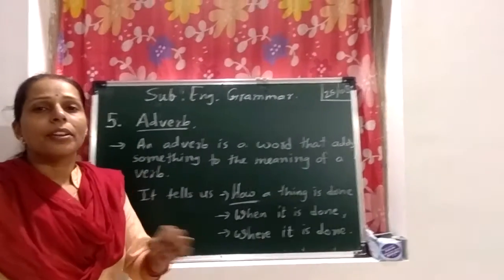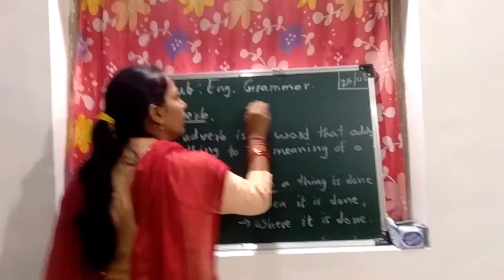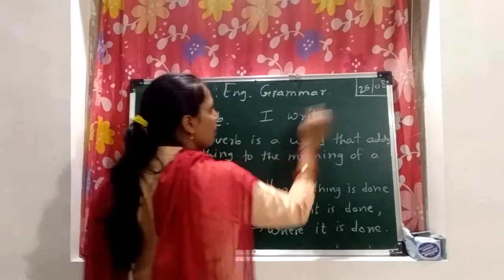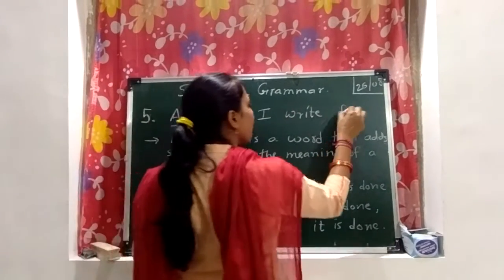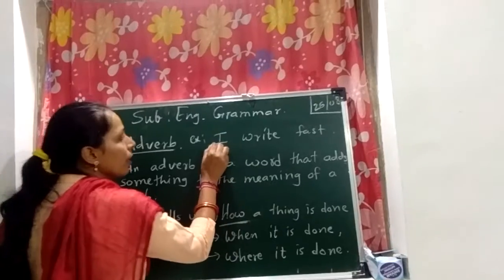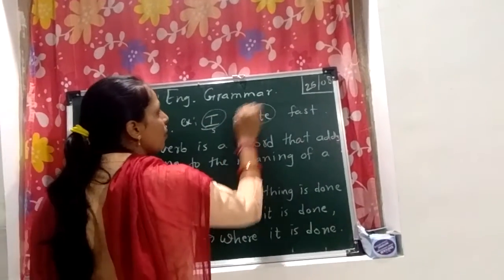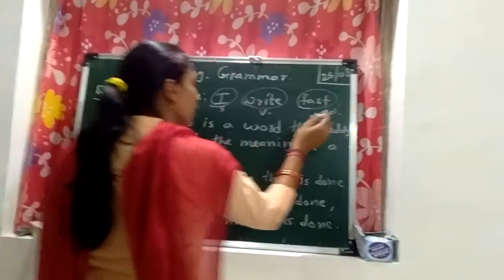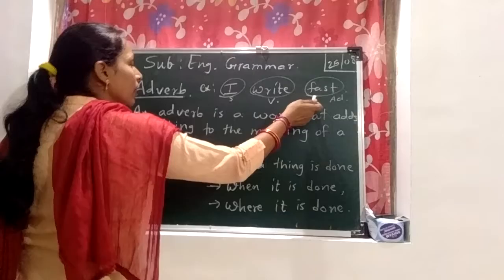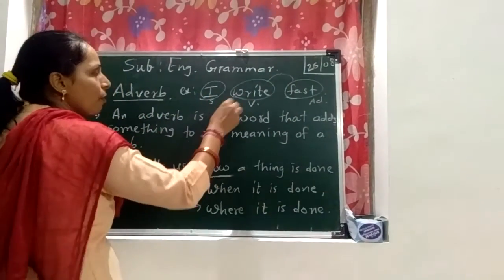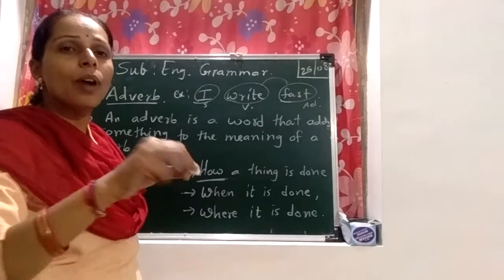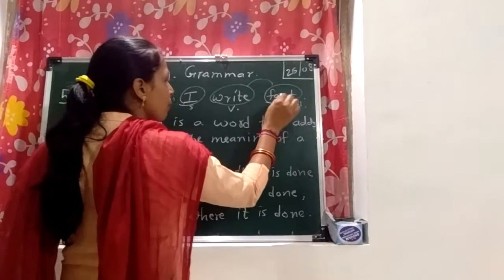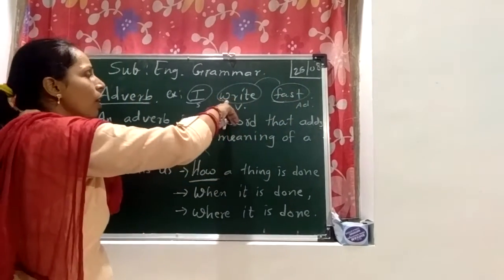I write fast. In this sentence, 'I' is the subject, 'write' is the verb, and 'fast' is the adverb. Here, 'fast' is the word that adds something to the meaning of the verb. I write — but how do I write? Fast. So 'fast' is a word that adds something to the meaning of the verb.